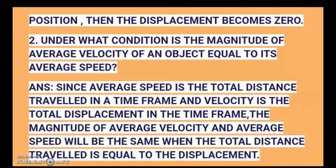If the object, after covering a certain distance, comes back to its initial position, then the displacement becomes zero. Next question: under what condition is the magnitude of average velocity of an object equal to its average speed? Answer: since average speed is the total distance traveled in a time frame and velocity is the total displacement in the time frame, the magnitude of average velocity and average speed will be the same when the total distance traveled is equal to the displacement.